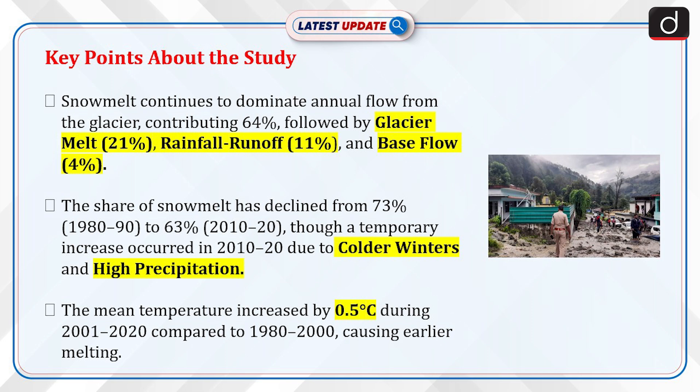Snowmelt continues to dominate annual flow from the glacier, contributing 64%, followed by glacier melt at 21%, rainfall runoff at 11%, and base flow. The share of snowmelt has declined from 73% in 1980–1990 to 63% in 2010–2020, though a temporary increase occurred in 2010–2020 due to colder winters and high precipitation. The mean temperature increased by 0.5 degrees Celsius during 2001–2020 compared to 1980–2000, causing earlier melting.